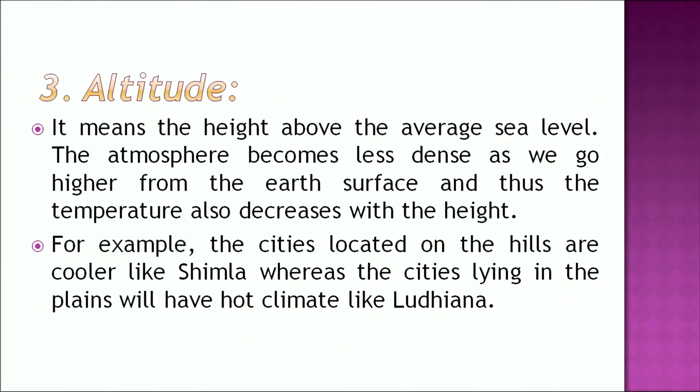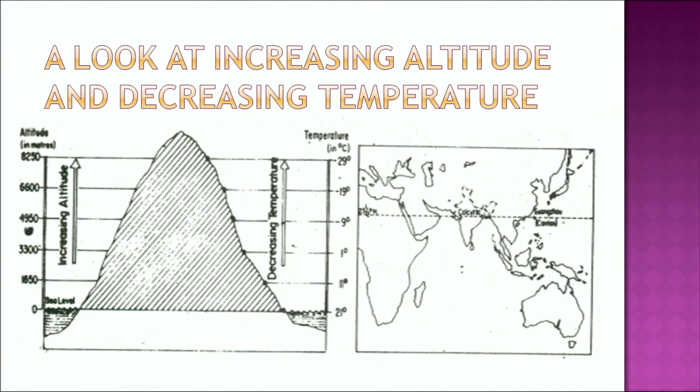Another factor is altitude, which means the height above the average sea level. The atmosphere becomes less dense as we go higher from the earth's surface, and thus the temperature also decreases with height. For example, cities located on the hills such as Shimla will be cooler than cities on the plains such as Ludhiana, which has a hot climate. This map shows how temperature decreases with increasing altitude.